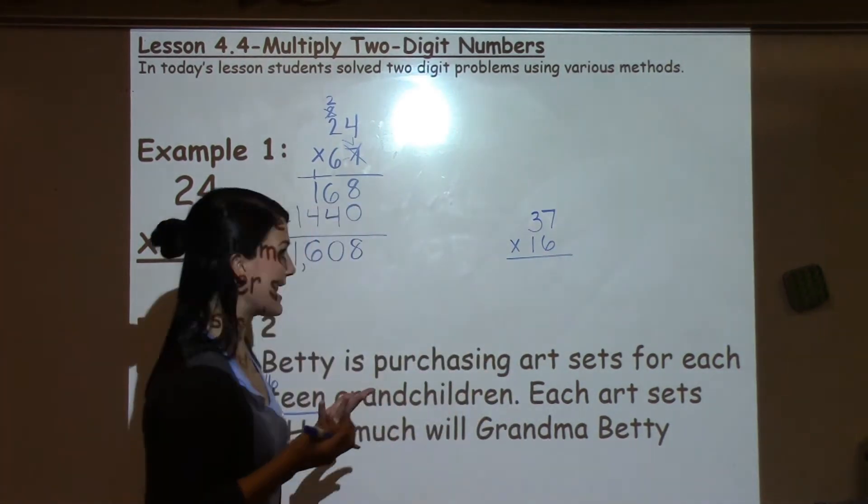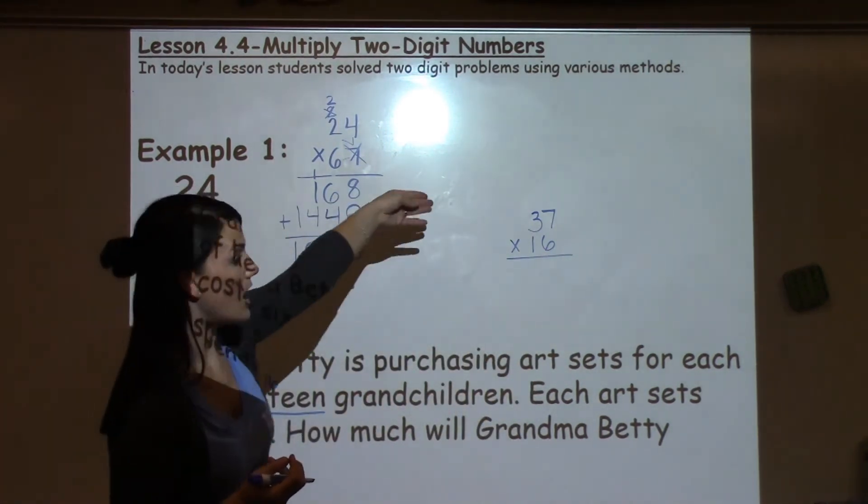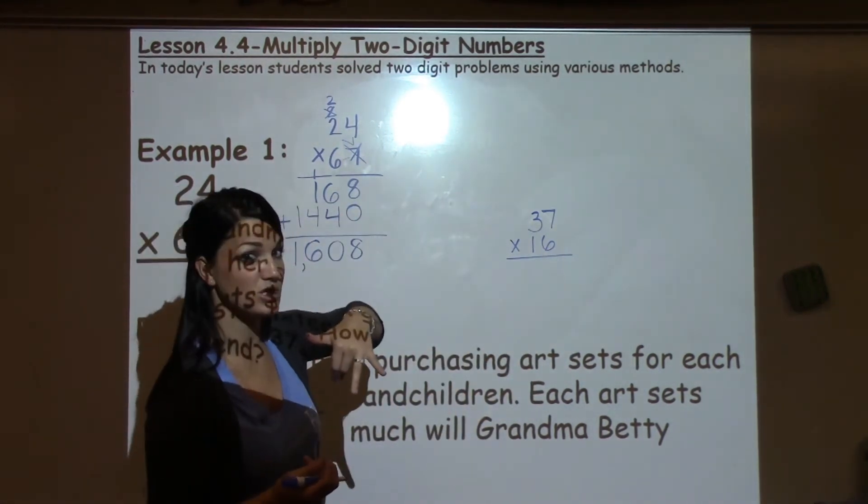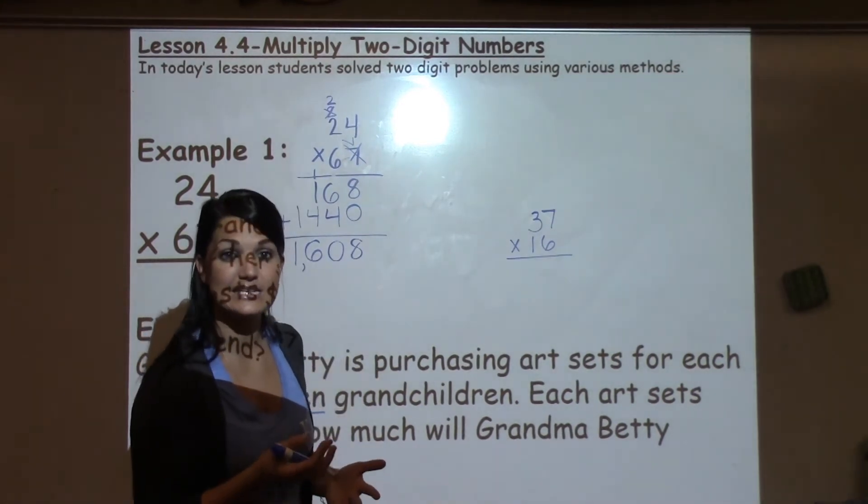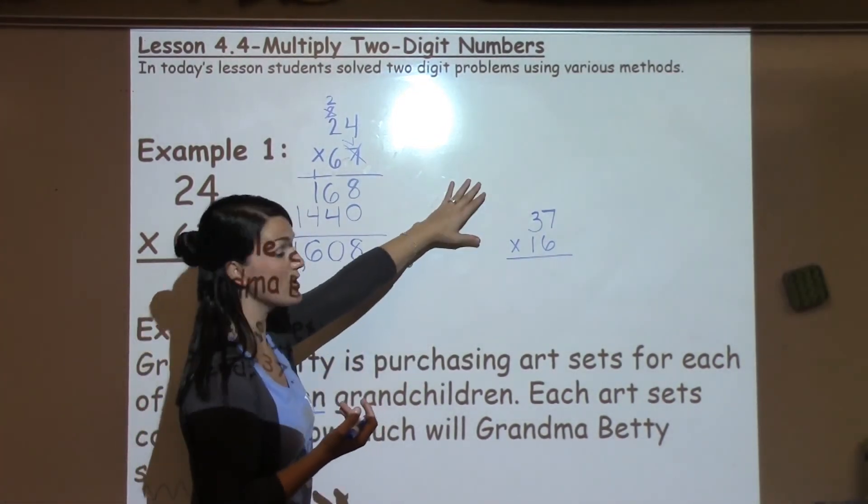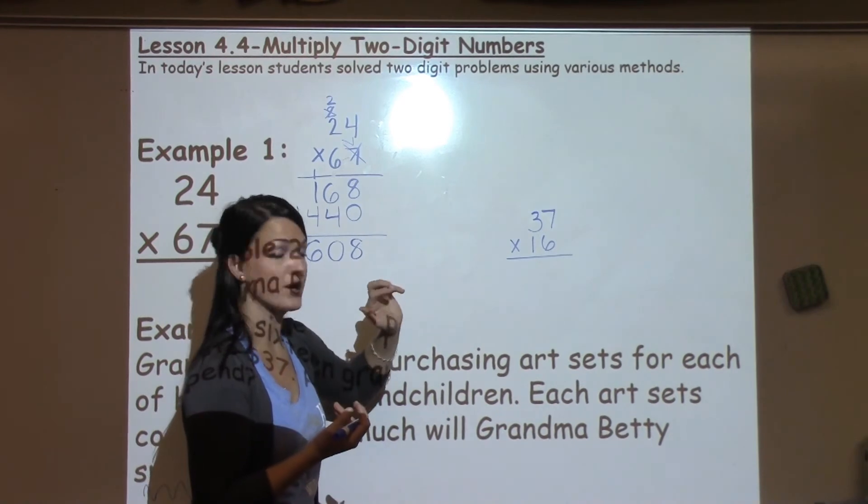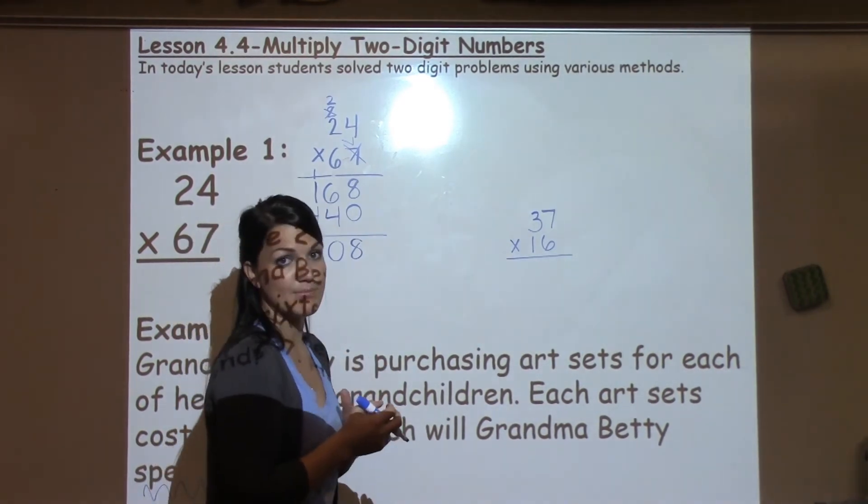Now, if your student is adamant about putting the 16 on top and doing 16 times 37, they're going to get the exact same answer. So with multiplication, the order does not matter. They can have either number on top or bottom.